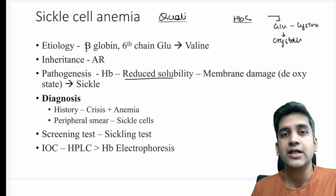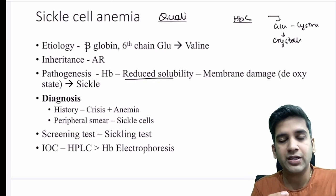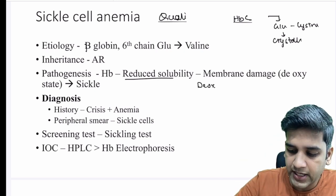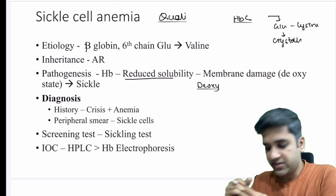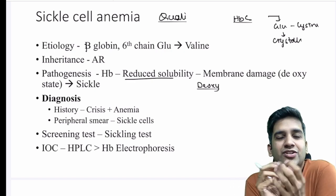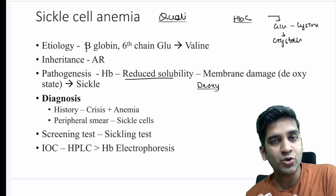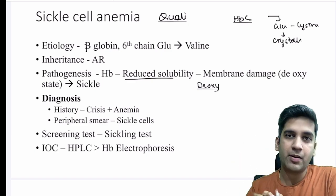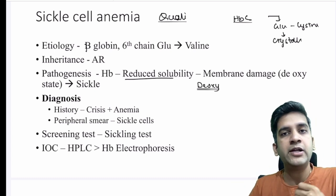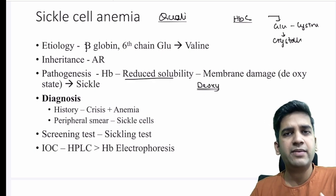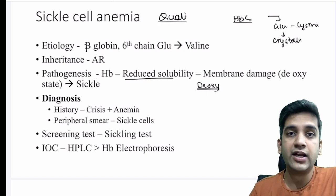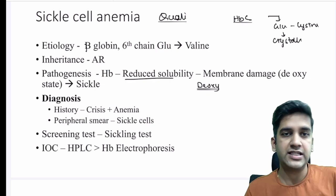Sickle cell anemia is undoubtedly an autosomal recessive inheritance. The reduced solubility and membrane damage are more pronounced in the deoxygenated state — especially in the limbs where oxygen is being extracted from the hemoglobin, causing it to narrow and clump more aggressively. The clumping causes membrane damage, resulting in a sickle-shaped RBC. Wherever oxygen levels are reduced — in the periphery or inflamed tissue — sickling is more likely.